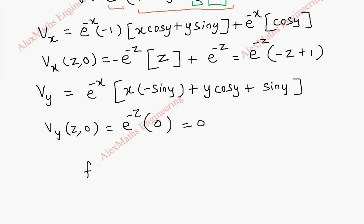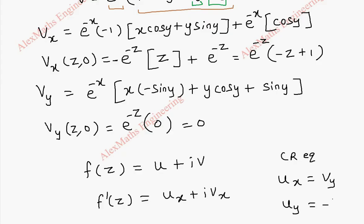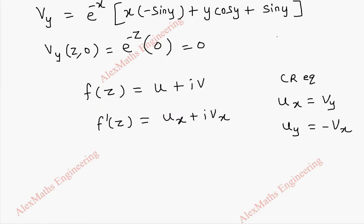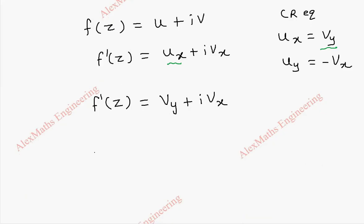Now we are going to take f of z as u plus iv and f dash of z will be ux plus ivx. Using CR equations, ux is vy and uy is minus vx. And we are going to replace this ux by this vy. So f dash of z becomes vy plus ivx. Using Milne-Thomson method, f of z becomes integral vy of z, 0 dz plus i integral vx of z, 0 dz.